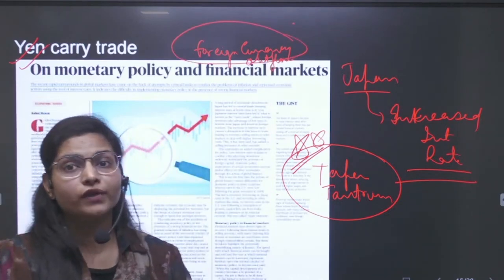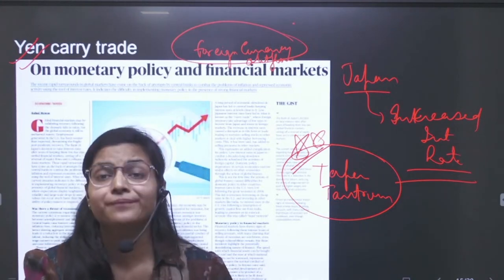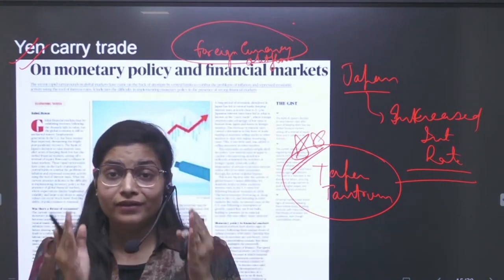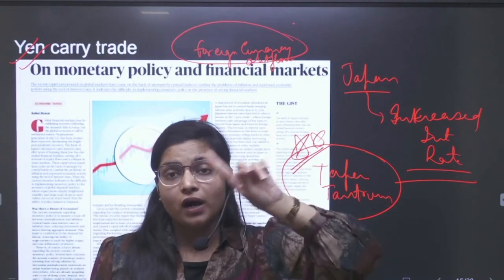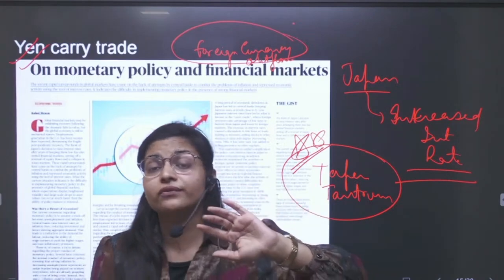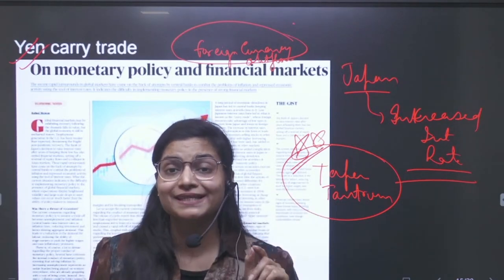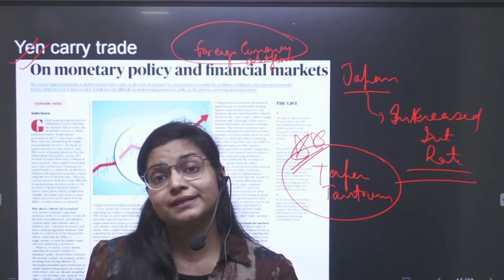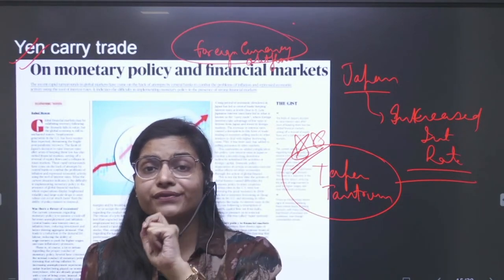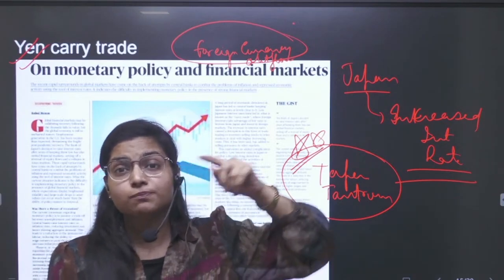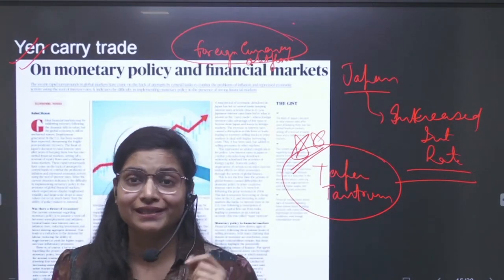There will be two impacts. If any economy increases their interest rate, there could be an outflow of money. In response, there is a chance that the RBI or any other central bank will also have to increase their interest rates to stop investors from leaving the market. So in response to Japan's interest rate increase, other central banks will also increase their interest rates to retain investors.